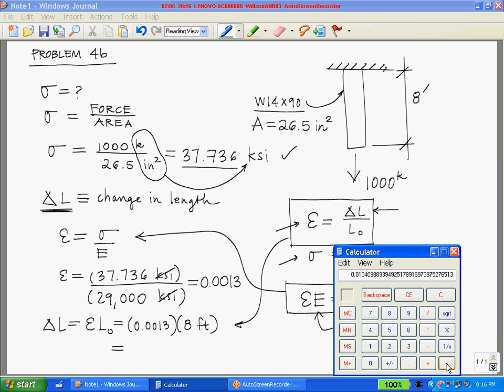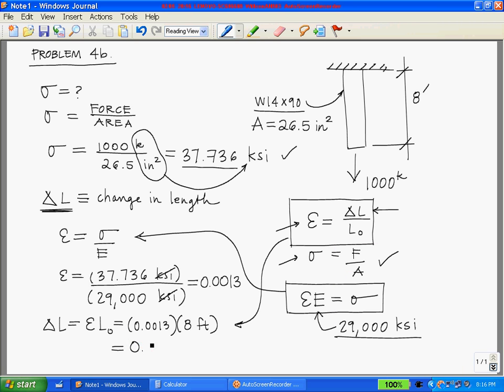Let's put that in the calculator: 0.0013 times 8 feet equals 0.0104, and our units are feet because strain is unitless.